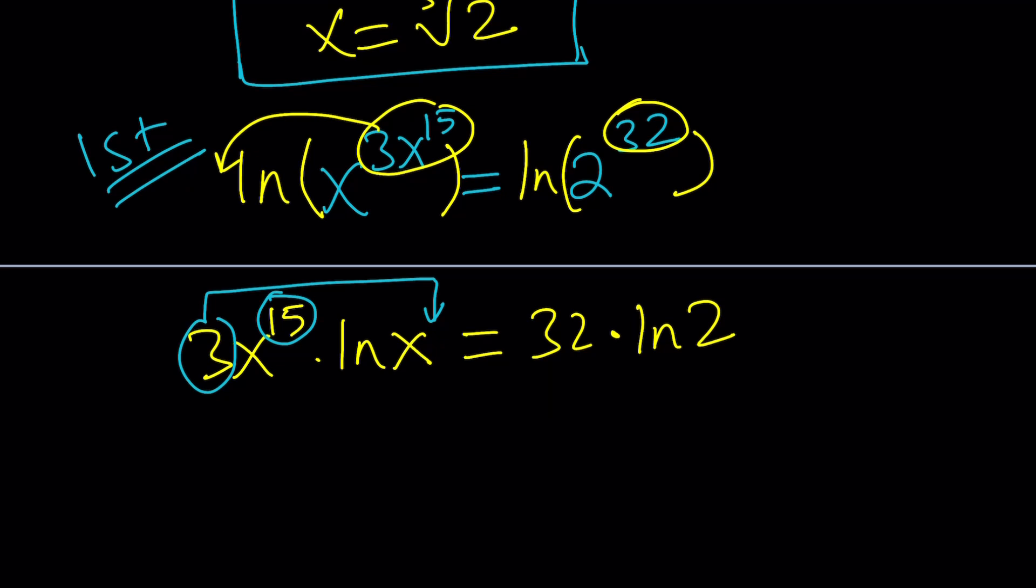So, that's our secret sauce. Multiply by 5 on both sides. And, of course, you're going to multiply the right-hand side as well. And, this is going to give us 15, 15x to the power of 15 times lnx.